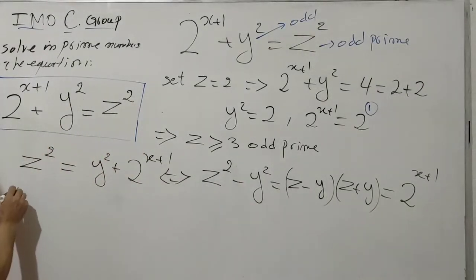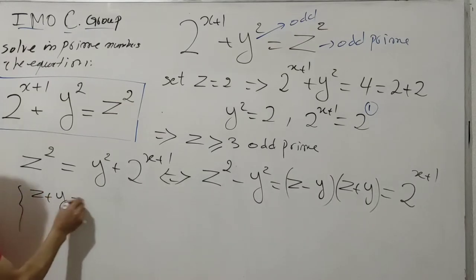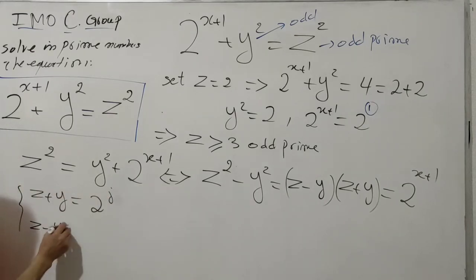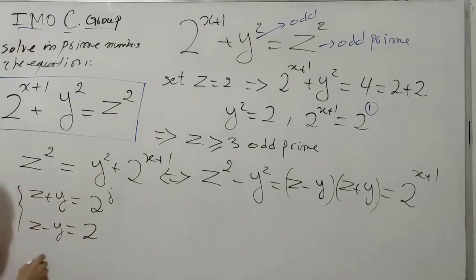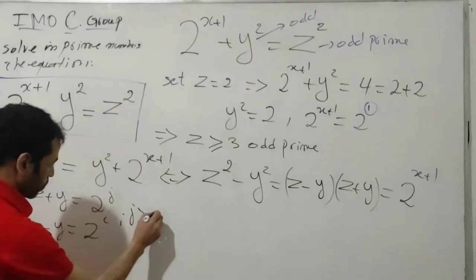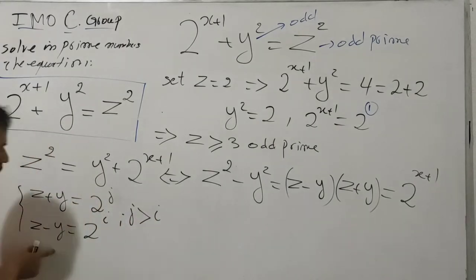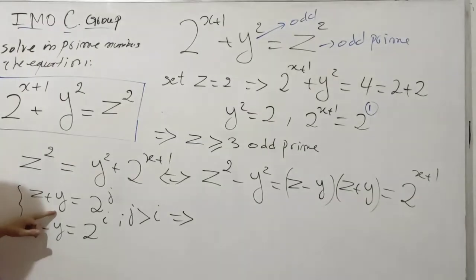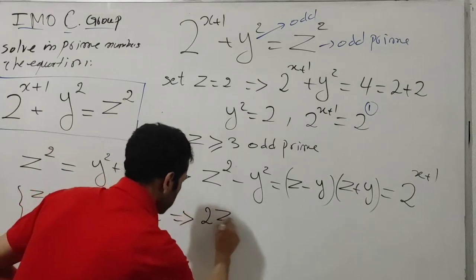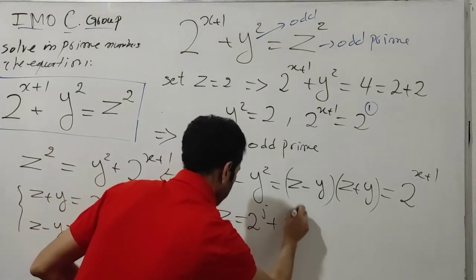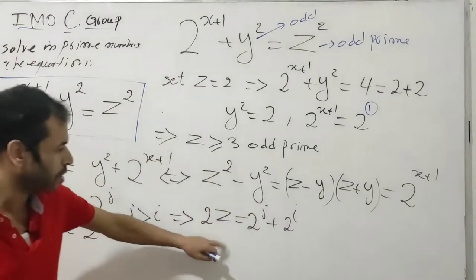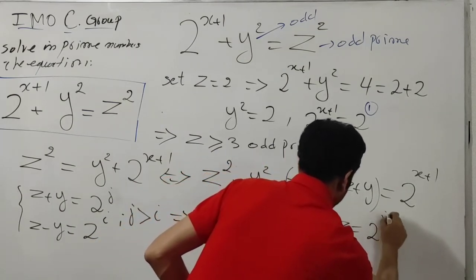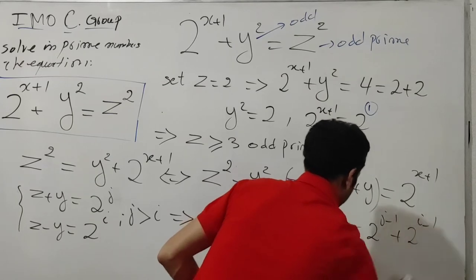So we write z + y = 2^j and z - y = 2^i, where j > i since z + y > z - y. Adding these two equations eliminates y and leaves 2z = 2^j + 2^i.